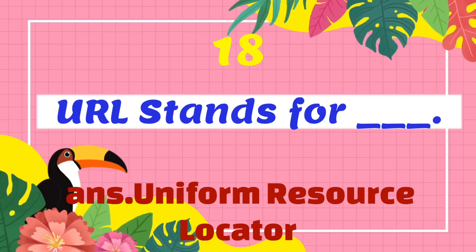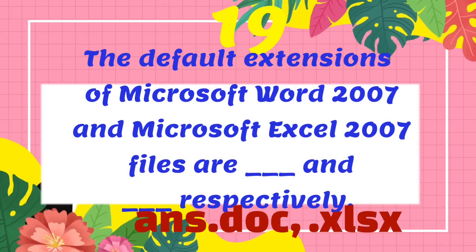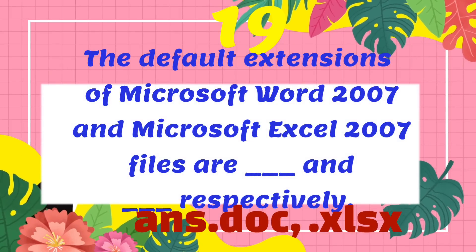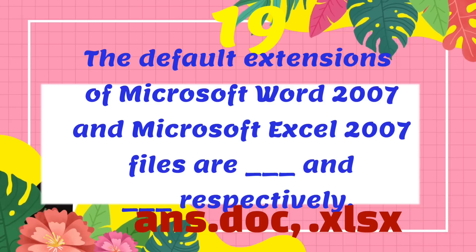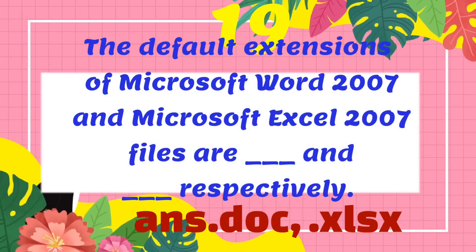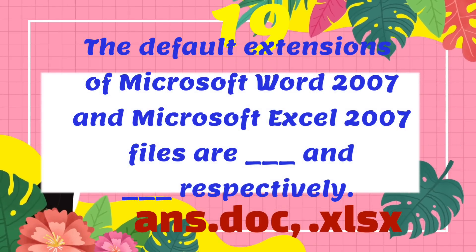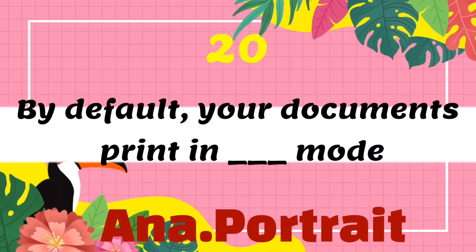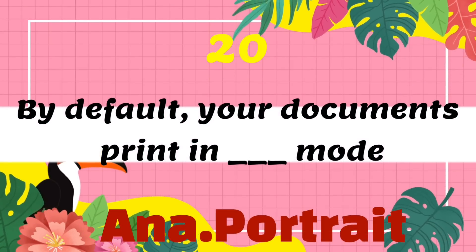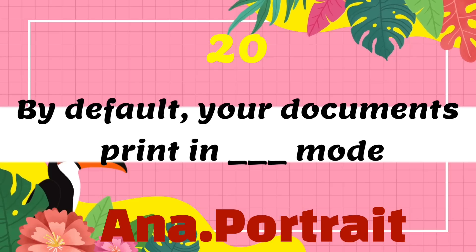Question number nineteen: the default extensions of Microsoft Word 2007 and Microsoft Excel 2007 files are what? The answer is .docx and .xlsx respectively. Question number twenty: by default your documents print in what mode? The answer is portrait mode.